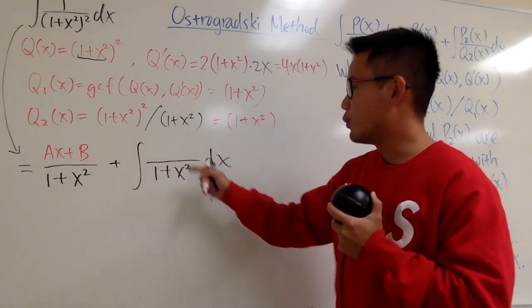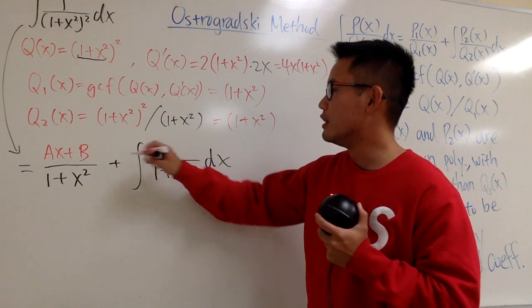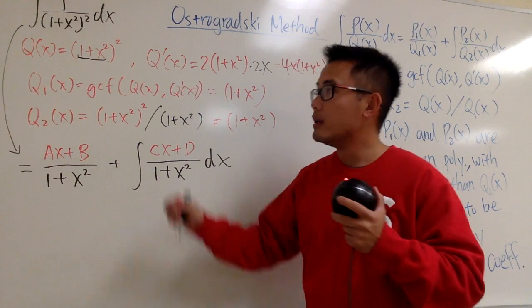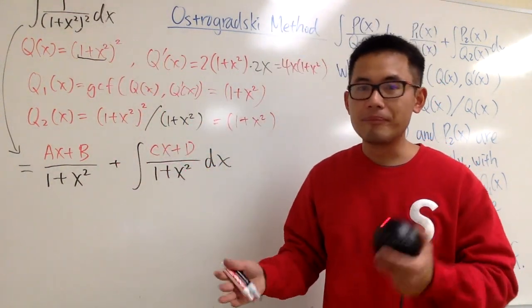And likewise, if you look at this, on the bottom it's a quadratic, on the top it has to be a linear. So I will write it down as cx plus d. So this is what we have. Once again, this is equal to that. And this is pretty much the setup. So it's kind of like partial fraction, isn't it?